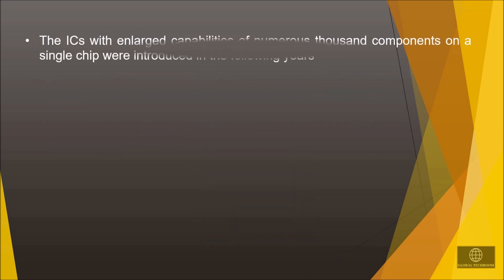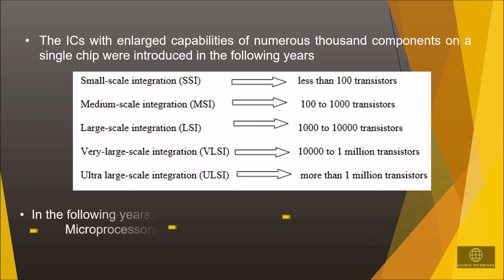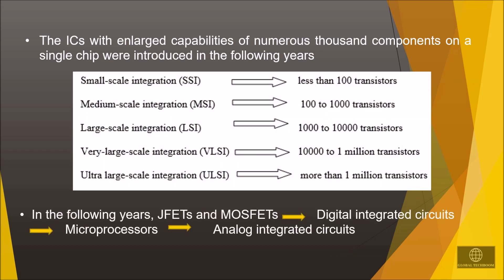In the following years, ICs with enlarged capabilities of numerous thousand components on a single chip were introduced, such as small scale integration, medium scale integration, large scale integration, very large scale integration, and ultra large scale integration ICs. From the figure we can see the number of components used in each IC. JFETs, MOSFETs, digital integrated circuits, microprocessors, and analog integrated circuits were developed in the following years. That's all about the fundamental understanding of electronic history.